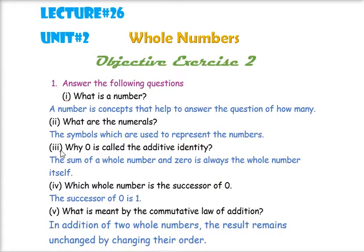Question number 3: Why is zero called the additive identity? Zero को हम additive identity क्यों कहते हैं? The sum of a whole number and zero is always the whole number itself. यानि अगर हम किसी भी whole number का sum करें, जैसे के हमने last lecture में भी इसको किया था, जैसे हम 1 में अगर zero add करते थे तो हमारा answer 1 ही आता था।